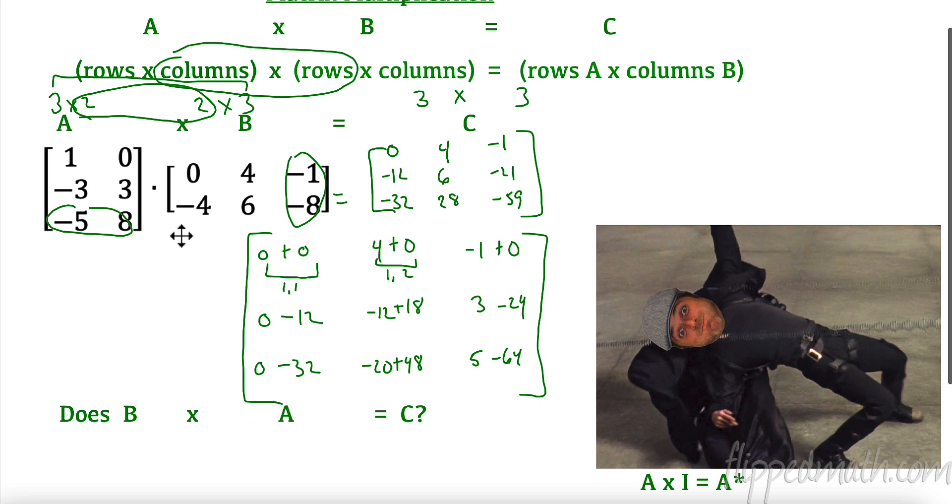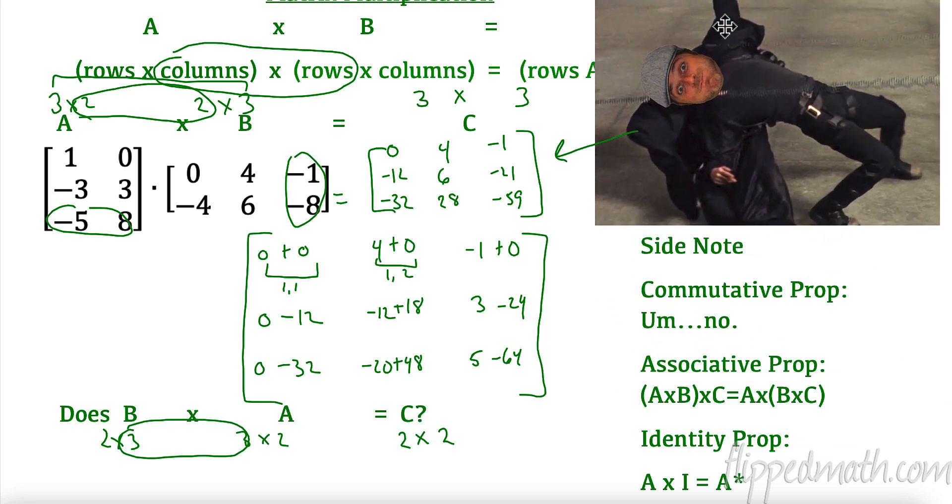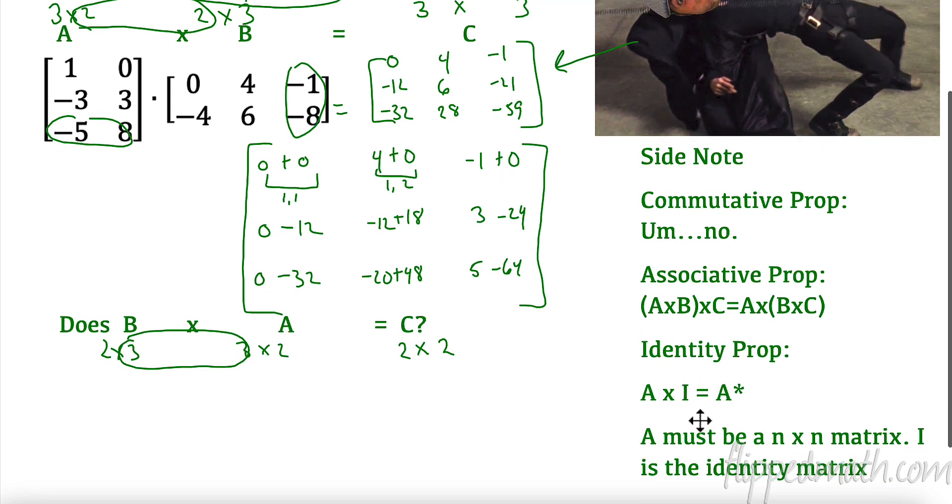Alright. Question. We did A times B. If I flip them, if I did the commutative property, would it work? Well, B is a 2 by 3 matrix. And A is a 3 by 2 matrix. So this matches. So we can multiply them. But what would our result be? It would be a 2 by 2 matrix. Are we allowed to have a 2 by 2 matrix? Yes, we are. Is that going to be the same as what we had up here? No, it's not. So the commutative property actually does not work. Alright? So the commutative property doesn't work. The associative property is going to work. And the identity property will work as well. The identity property we'll talk more about as we go. But it only works when it's an n by n matrix. So a square matrix. And I has to be something called an identity matrix, which we'll talk more about as we go along.